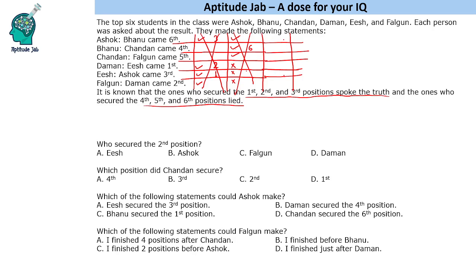So, Daman and Fagun are not truth tellers. Only Ish is telling the truth. If Ish is telling the truth, then Ashok is third. Ashok is third, so Ashok must be a truth teller. Ashok says Bhanu came sixth, so Bhanu is sixth and Bhanu cannot tell the truth. Therefore, Chandan should be telling the truth. Chandan says Fagun came fifth, so Fagun is fifth.